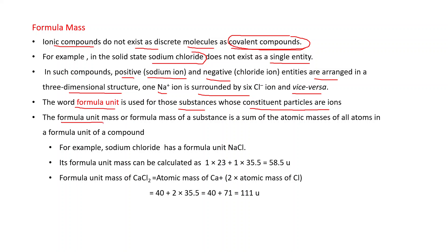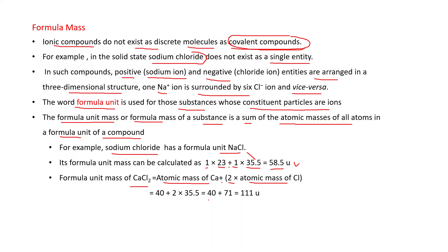The formula unit mass or formula mass of a substance is the sum of the atomic masses of all atoms in a formula unit of a compound. For example, for sodium chloride (NaCl), the formula unit mass is: 1 × 23 (atomic mass of sodium) + 1 × 35.5 (atomic mass of chlorine) = 58.5 U. Similarly, the formula unit mass of CaCl₂ is: atomic mass of calcium + 2 × atomic mass of chlorine = 111 U.